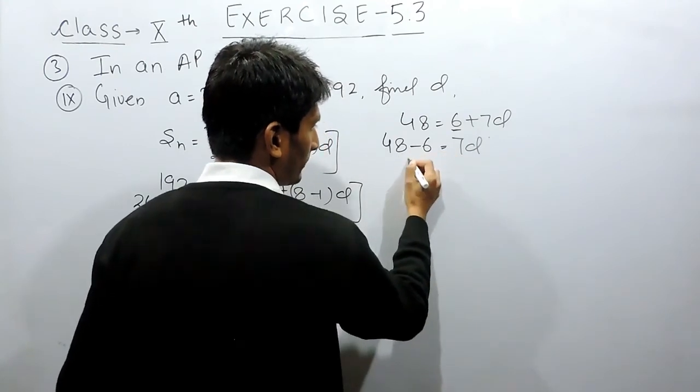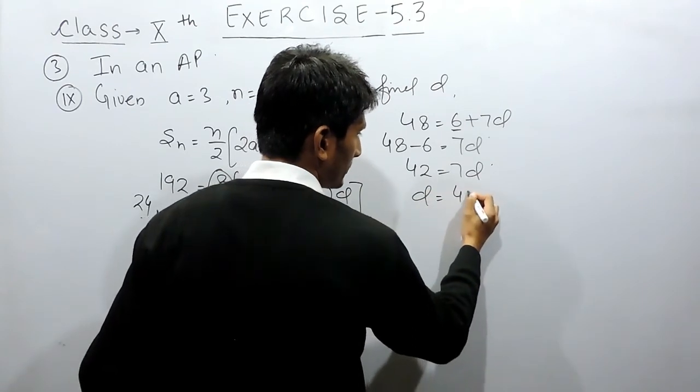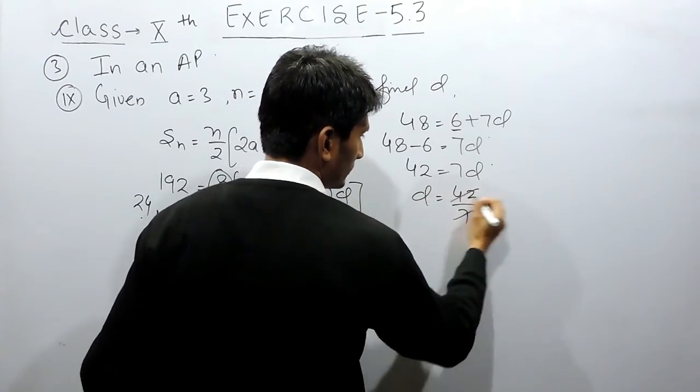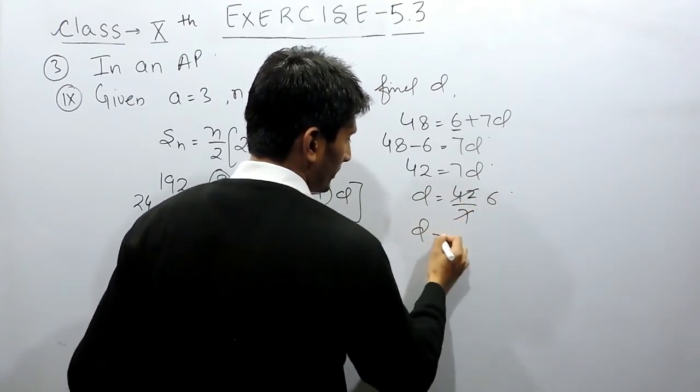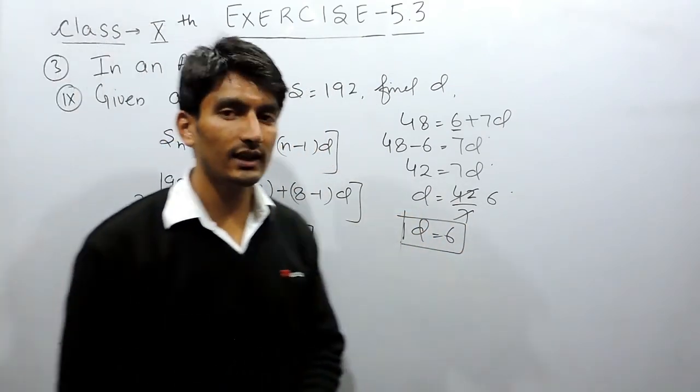And this will become 42 and this is 7D. So here, the common difference must be equal to 42 upon 7. So here, the common difference must be equal to 6. So here, the common difference must be 6.